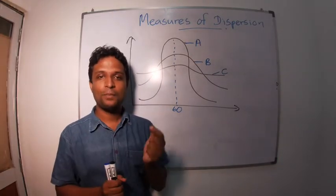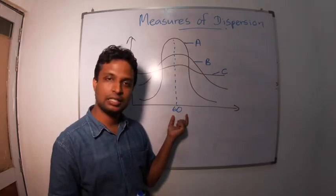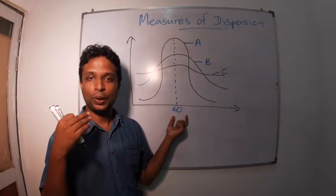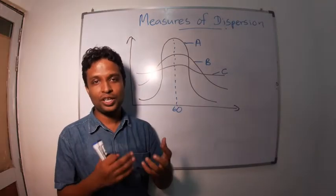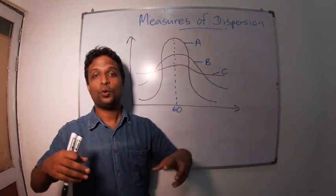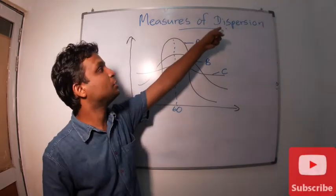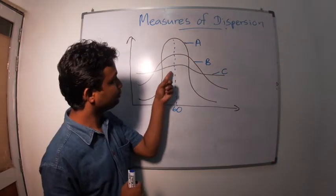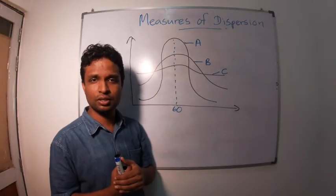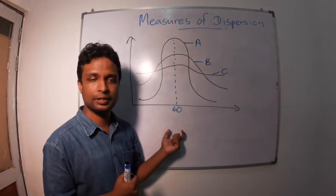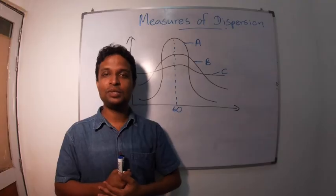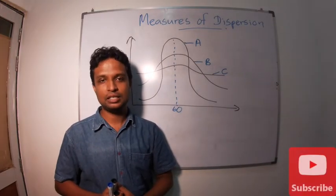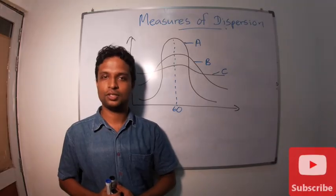Remember, measure of central tendency alone is not sufficient to describe a distribution. We need some other measure. We need to measure dispersion or the distribution of variables. Here, three types of distributions with the same central tendency. What to do now? We need to learn about measures of dispersion.